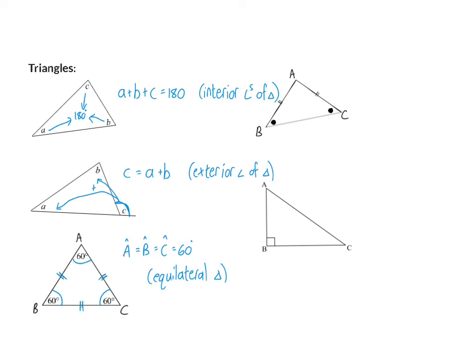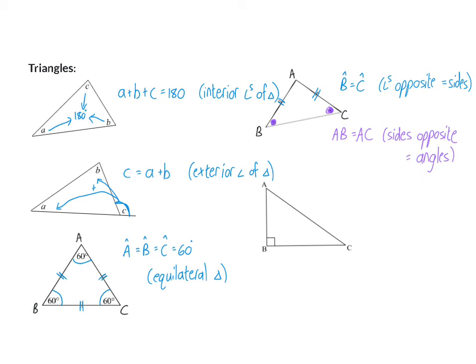Then we have an isosceles triangle. In our isosceles triangle, two of the sides are equal in length. When we know those two sides are equal in length, we can say that angle B is equal to angle C. Our reason: they are angles opposite equal sides. But it can also work the other way around — if we know that the two angles are the same size, we can say that side AB will be the same length as side AC, and this time my reason will be: sides opposite equal angles.